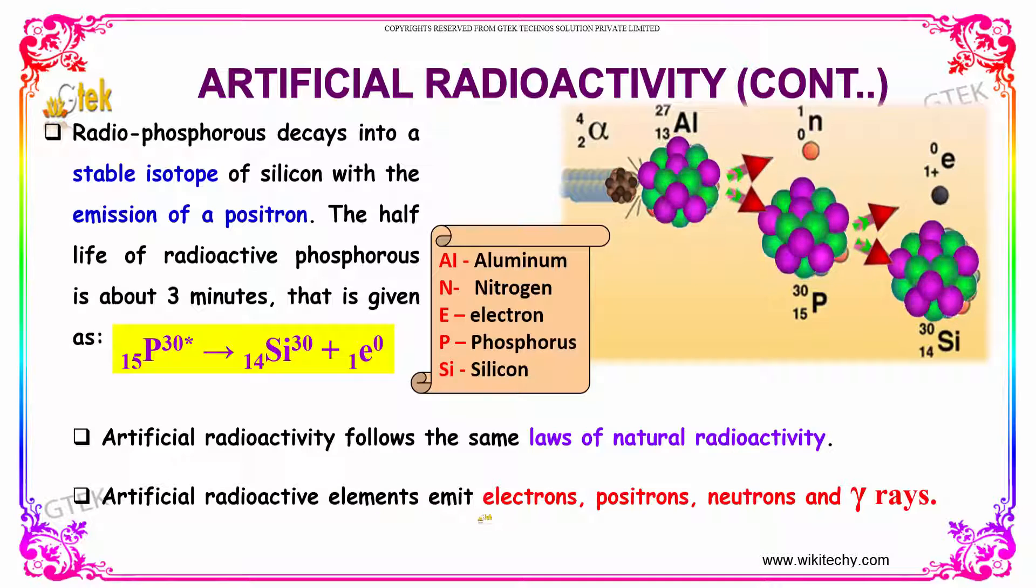Artificial radioactive elements emit electrons, positrons, neutrons, and gamma rays.